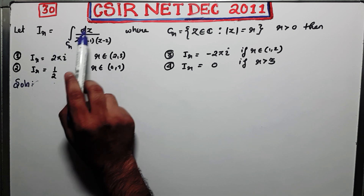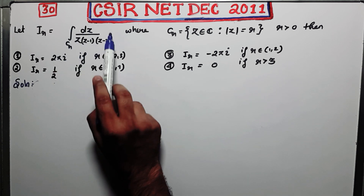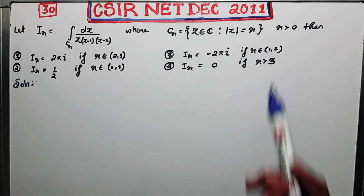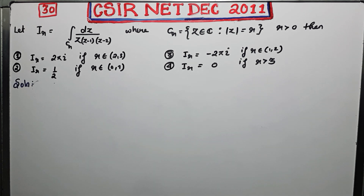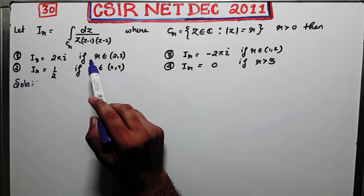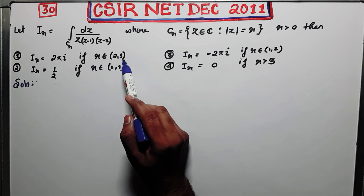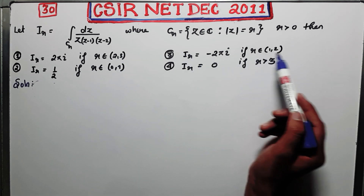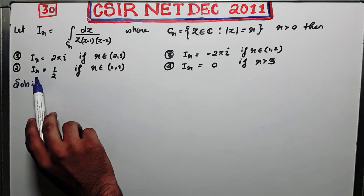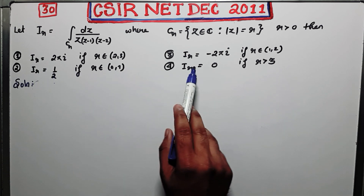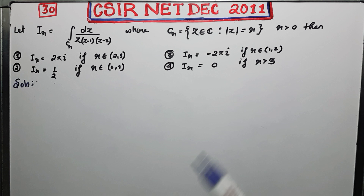Let IR represent this integral over CR, where CR is a circle of radius R. The options are: IR equals 2πi if R belongs to (2,3); IR equals minus 2πi if R belongs to (1,2); IR equals 1/2 if R belongs to (0,1); and IR equals 0 if R is greater than 3.